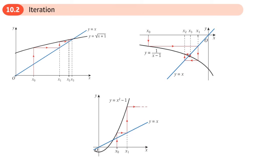This is the second section of the numerical methods chapter and this section is called iteration — a method we can use to help us locate roots. You'll see these diagrams, sometimes called spider diagrams, and you can see how these lines seem to creep towards the roots. These two creep towards the roots; this one just shoots off.